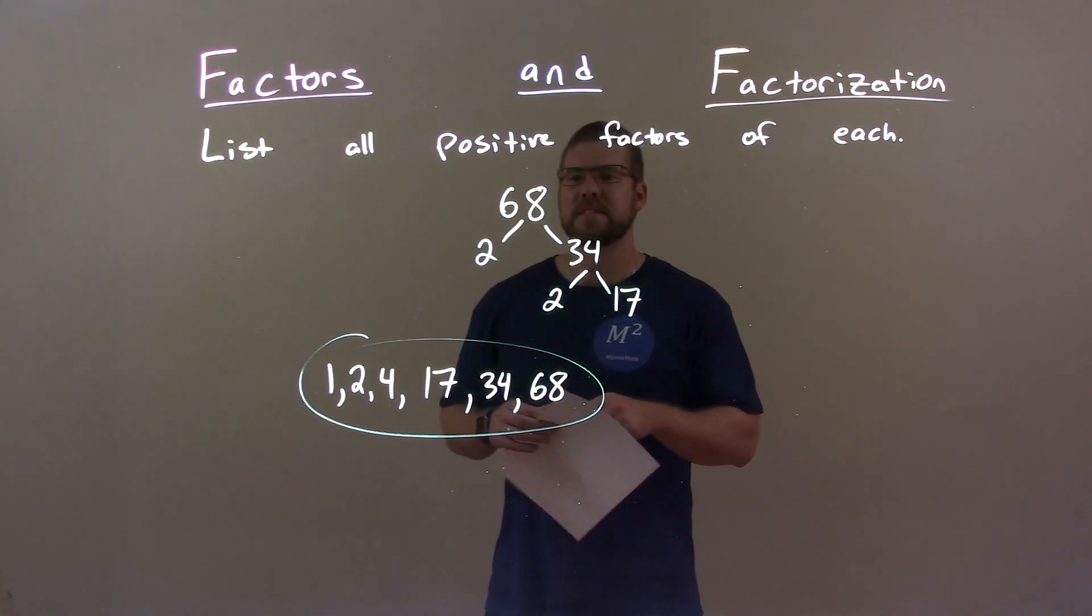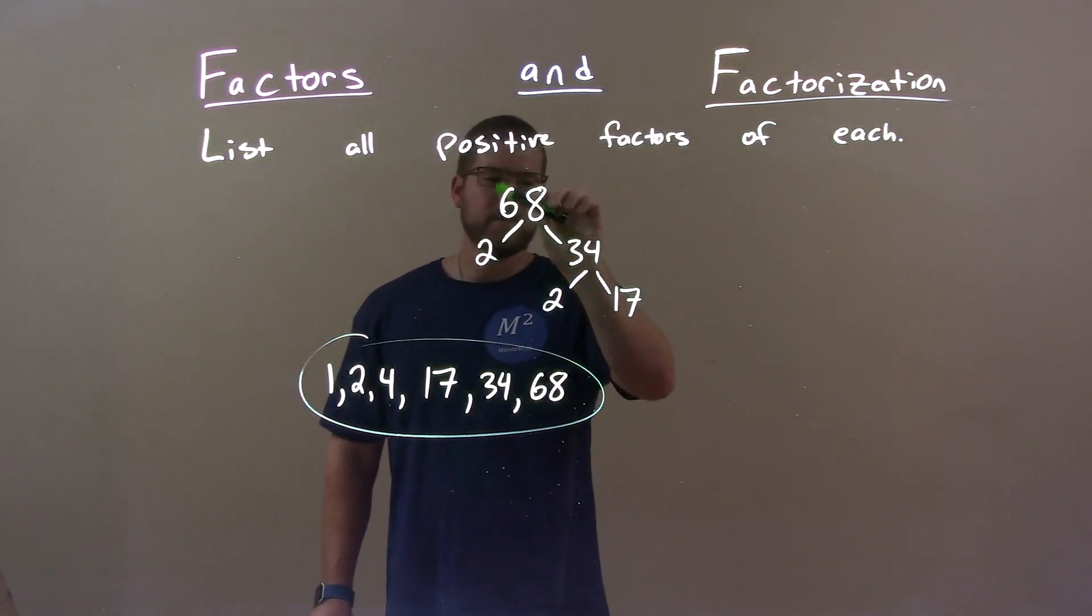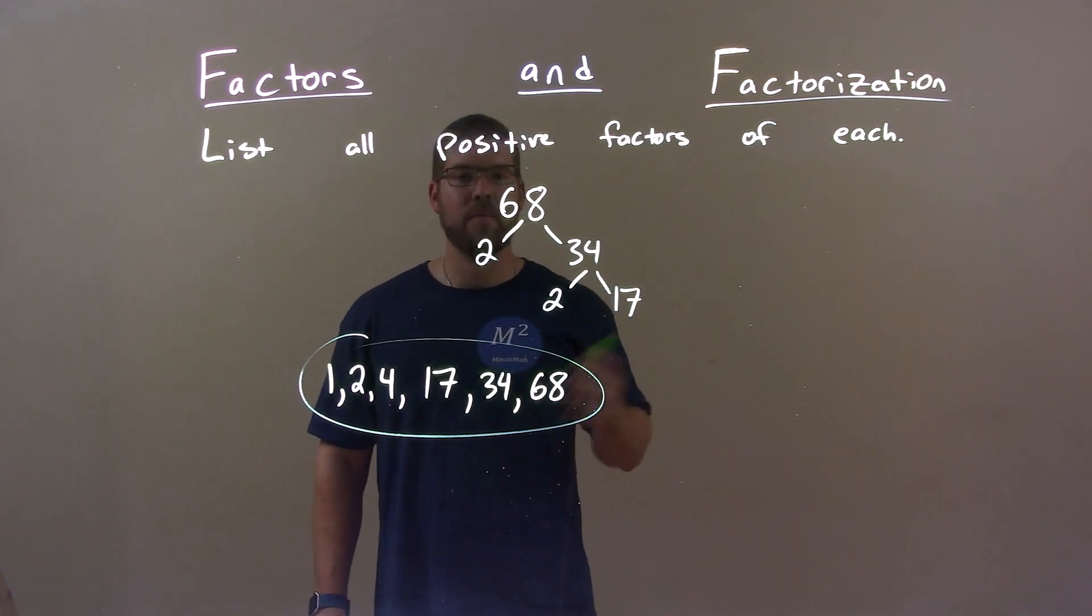So quick recap. We're given 68 and we have to find all the positive factors of it. Well, I broke down my prime factorization and then I started compiling my list. The numbers will always have 1 and the number itself and any multiplication of these here.